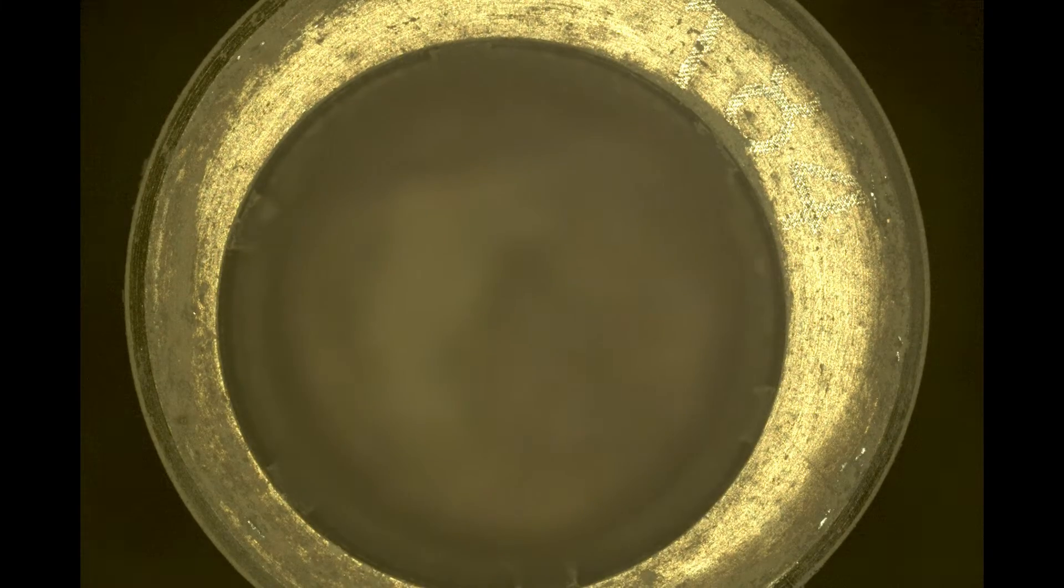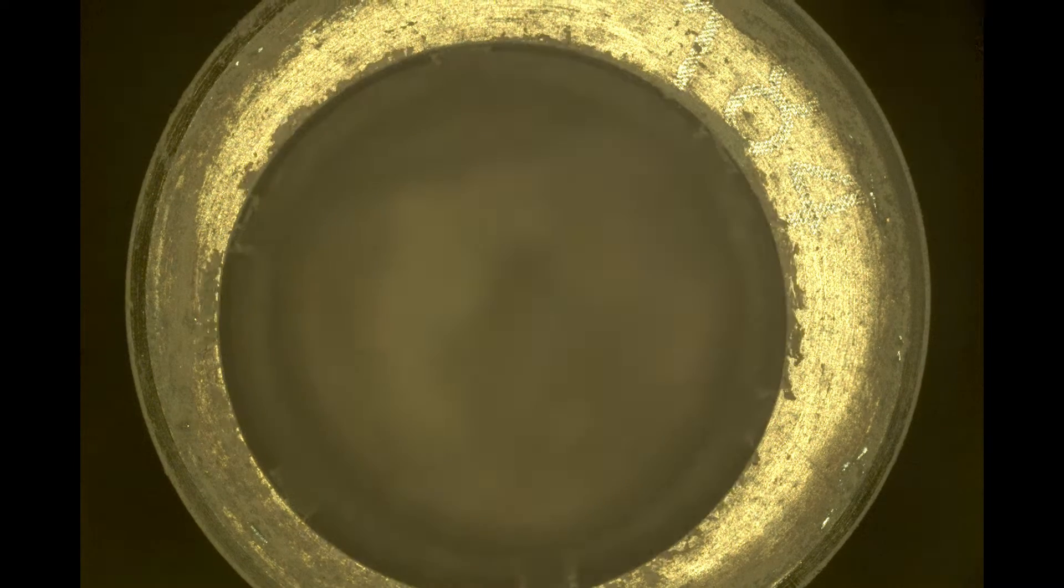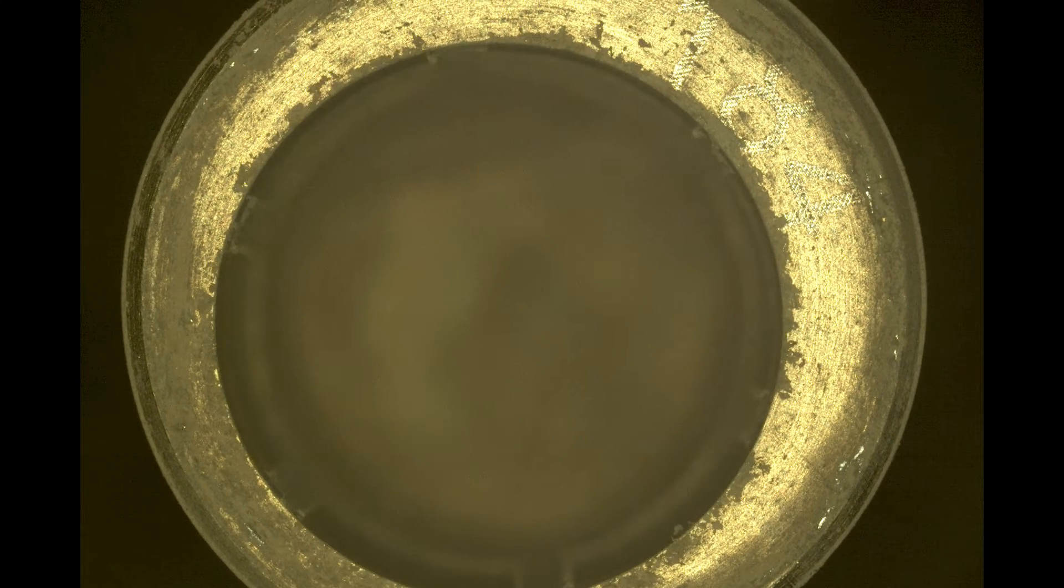The Martian regolith would also reveal a kaleidoscope of grains under a microscope. There are so many different materials mixed into Martian regolith. Each sample represents an integrated history of the planet's surface.